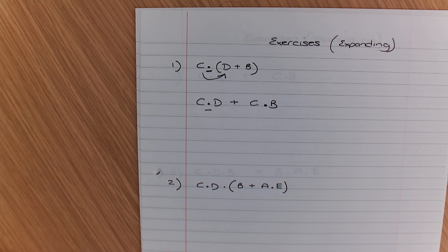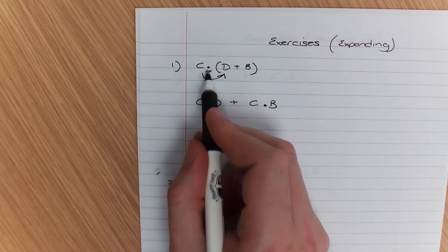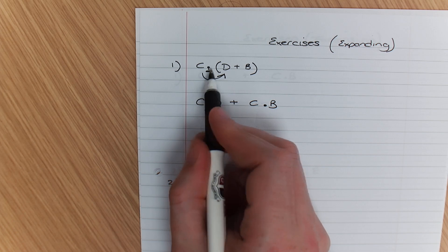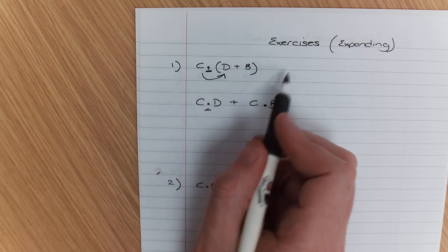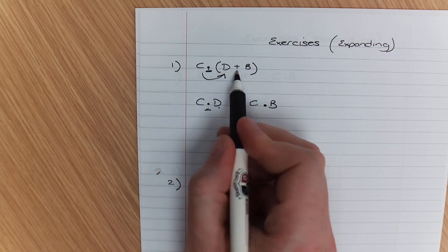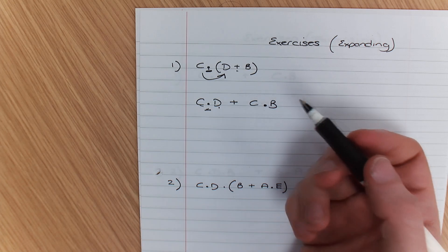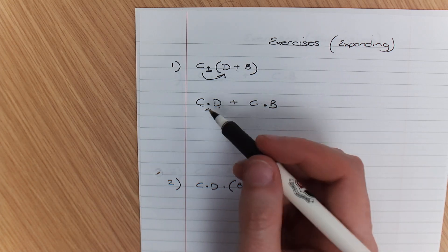Remember that our golden rule is that it's possible to expand the brackets in Boolean algebra expressions when an expression is anded. So what's happened here is it's been anded, so as a result we're able to expand that. So what I've done here is C and D or C and B. So that's kind of how we've got to that with our first one.